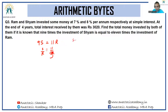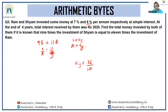Let Sham invest 11y and Ram invest 9y. Sham earns 8 percent for 4 years — that's 32 percent directly — giving 11y × 32 percent. Ram earns 7 percent for 4 years — 28 percent — giving 9y × 28 percent. All of this adds up to 3020.